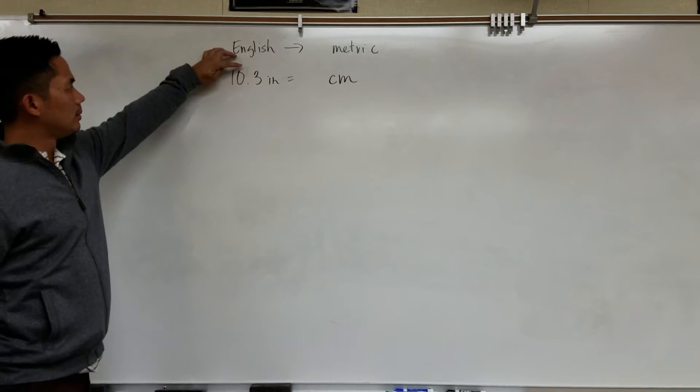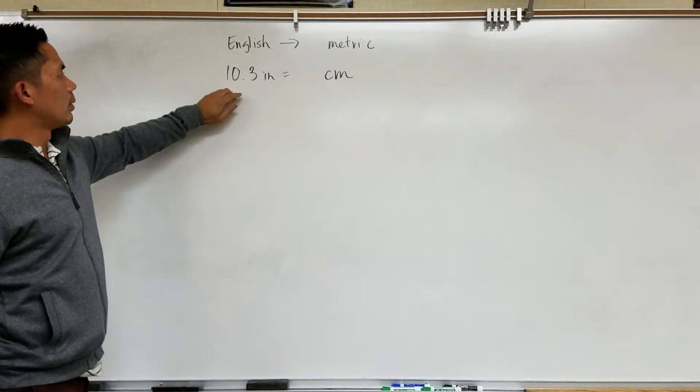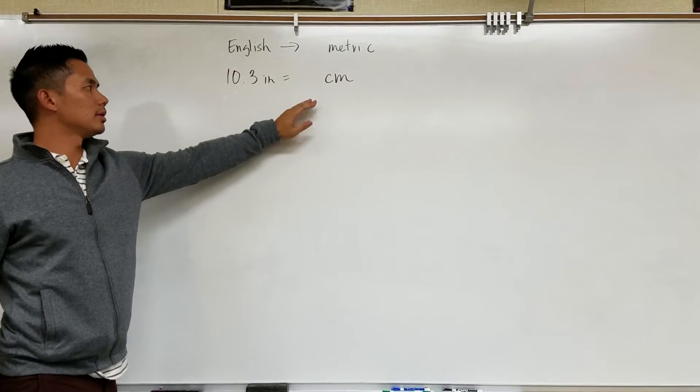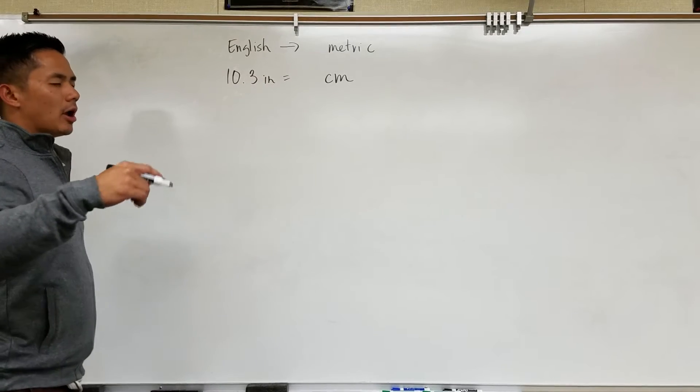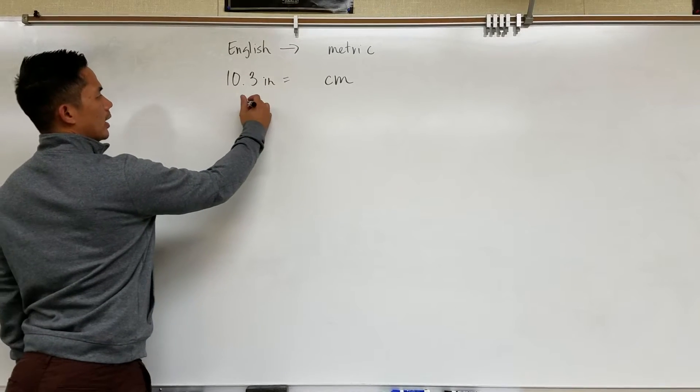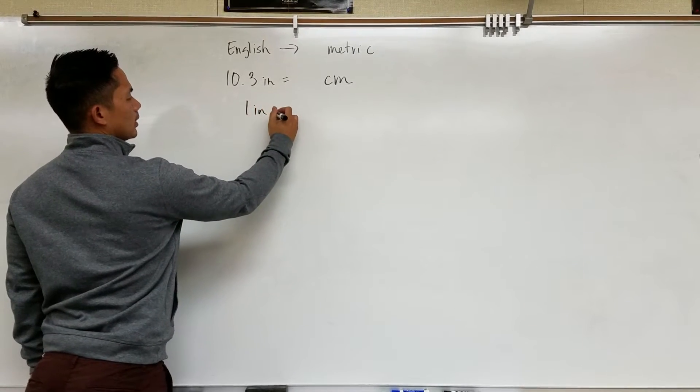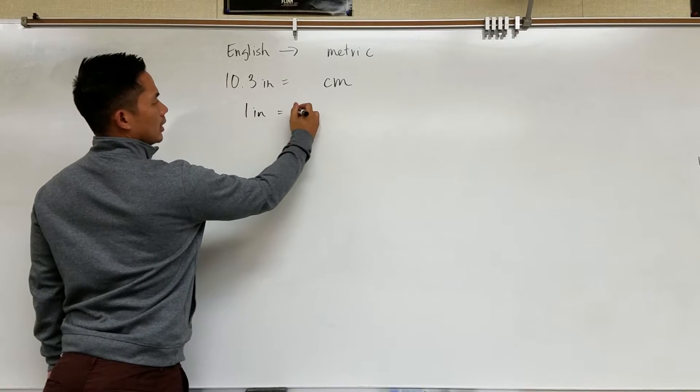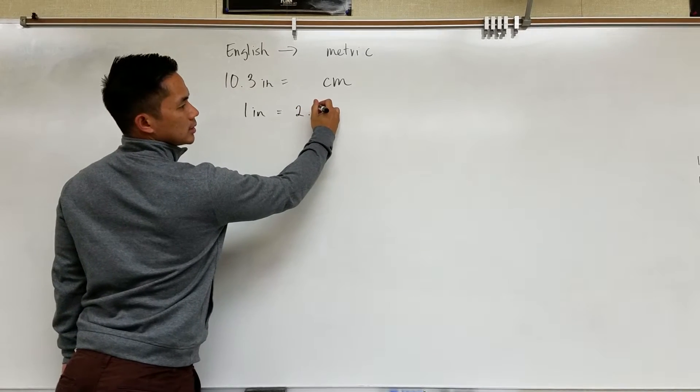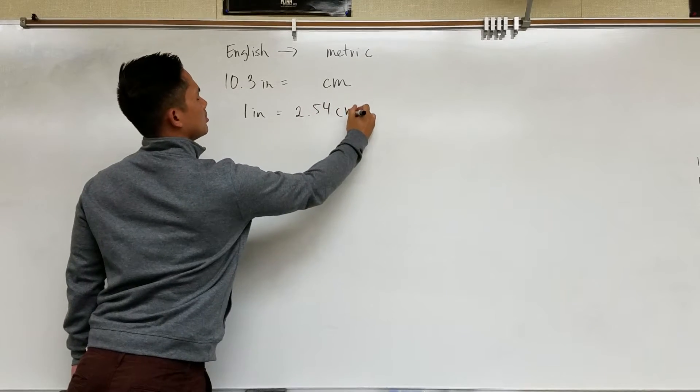Here we have 10.3 inches and we want to convert it into centimeters. The conversion rate is for every one inch, we have 2.54 centimeters.